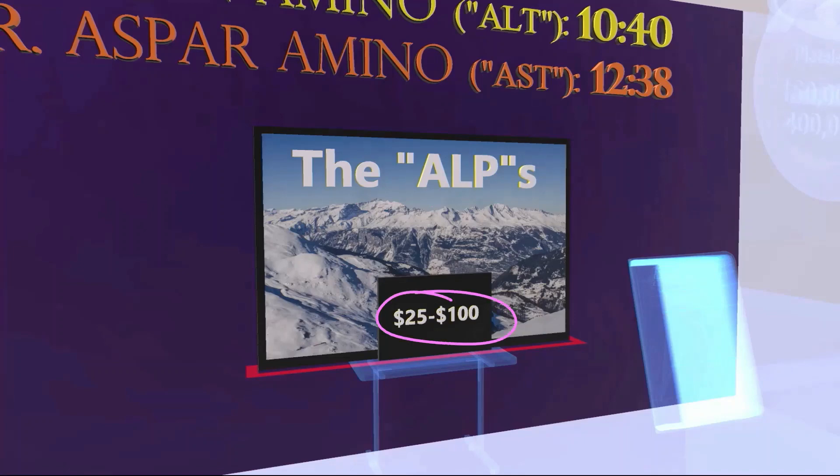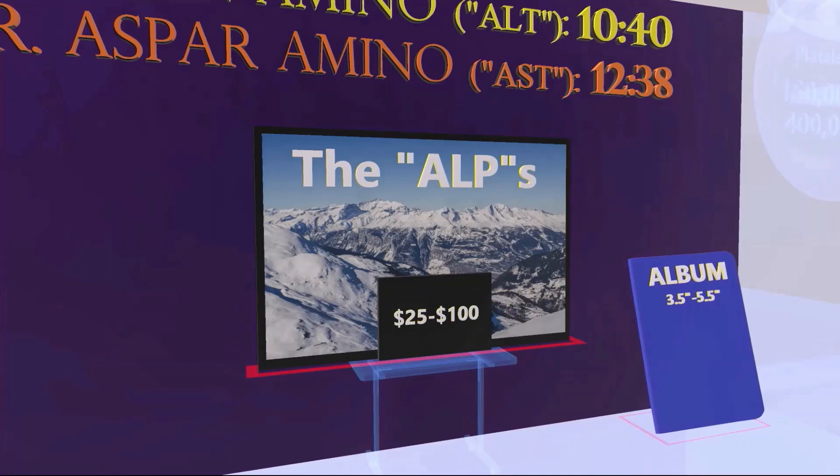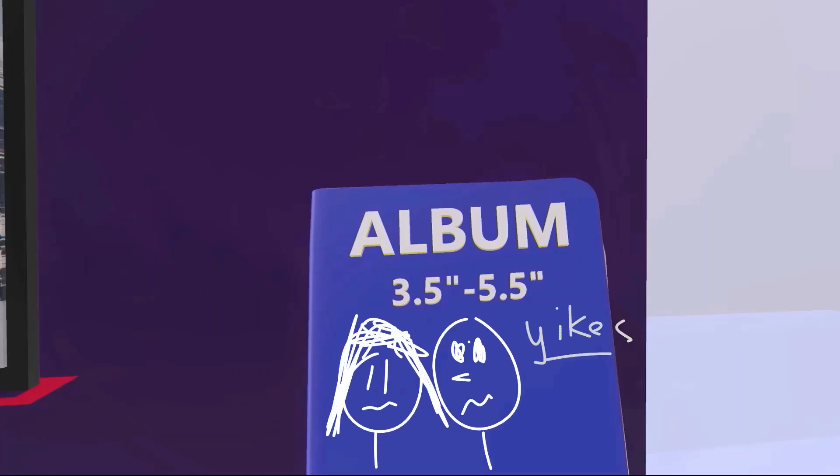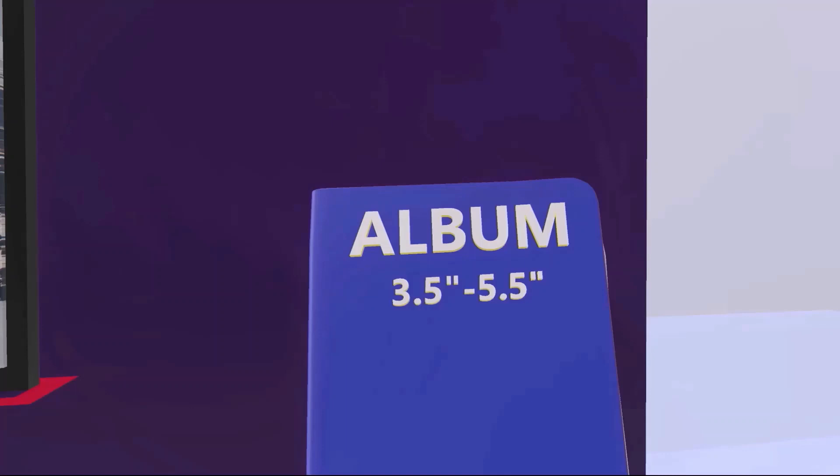Hey wait a minute, I think one of them left their album over here on the floor. I hope this is not their wedding album or something, that could be embarrassing. But anyway, this album over here that's 3.5 inches by 5.5 inches reminds us of albumin, that normal albumin levels in the body are 3.5 to 5.5 grams per deciliter. Now I didn't put this in the scene, but total protein in the body is about double this, between 6 to 7.8 grams per deciliter.